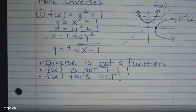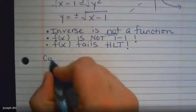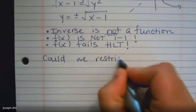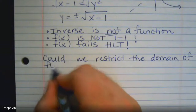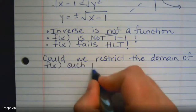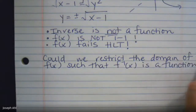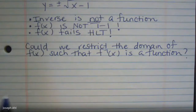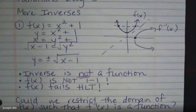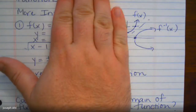What we can do, though, is ask: could we restrict the domain of f(x) such that the inverse is a function? Can we cut up that graph somehow on the x-axis such that the inverse would be a function? Going back to that rough sketch — can you imagine that if you just took either half of the parabola, it would pass the horizontal line test?